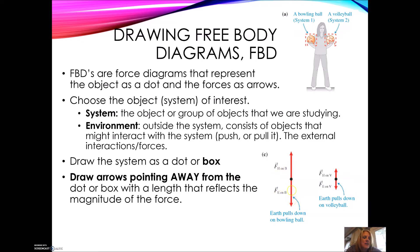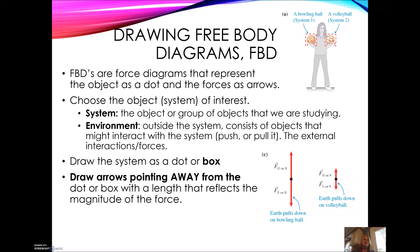The force pointing down is due to the earth — the force of gravity pulling on the ball downward. We're going to call it the force of earth on ball, though we'll simplify those terms in a bit. Here are the forces on the volleyball: the hand and the earth. Why are they smaller in magnitude than the bowling ball? Well, if you've ever held a bowling ball and a volleyball, you know the volleyball is a lot lighter, so she doesn't have to exert as much force to hold it up. The arrows show the magnitude — how big the force is — and the direction.